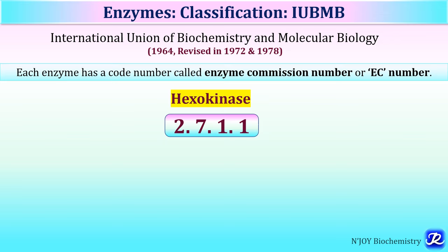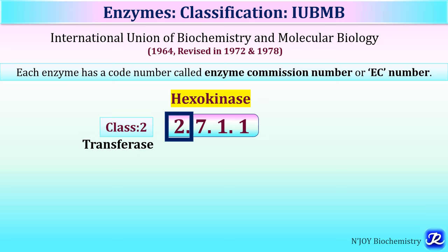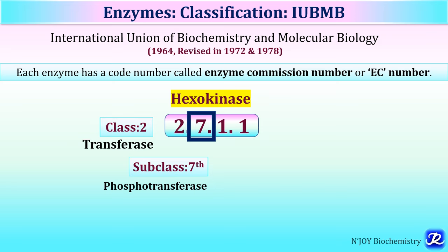For example, hexokinase has the EC number 2.7.1.1. The first digit, EC2, represents class 2 — transferases — so hexokinase belongs to transferases. The second digit, 7, represents the subclass; transferases have 9 subclasses and hexokinase belongs to the 7th subclass, phosphotransferases.